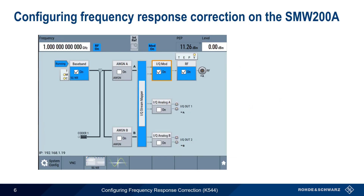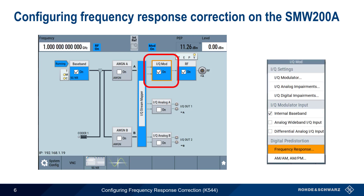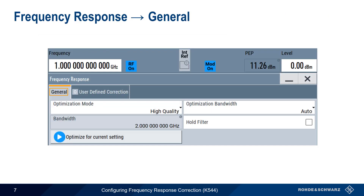Let's walk through how this is configured and enabled on the SMW200A. Because frequency response correction is done on the IQ values themselves, we start by going to the IQ modulation block and then select frequency response from the IQ modulation menu. There are two tabs under frequency response: general and user defined correction. In most cases, we want to have optimization mode set to high quality. This is the only parameter that we need to check or configure under the general tab.